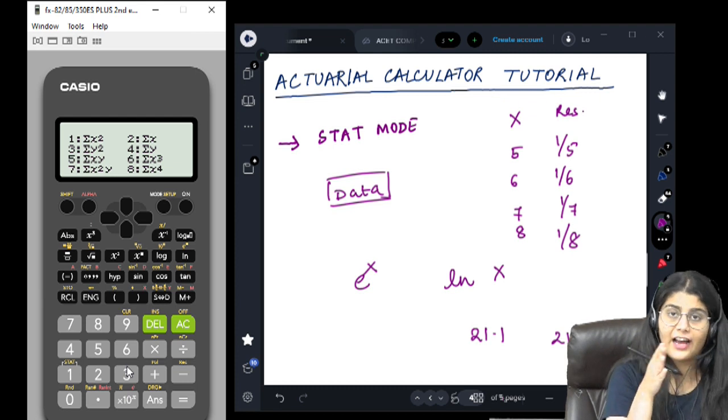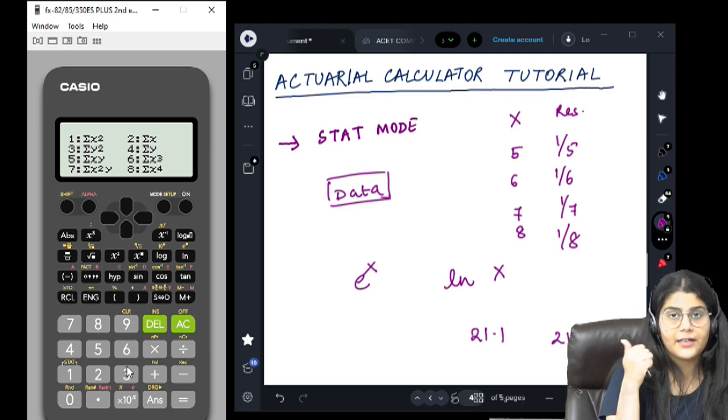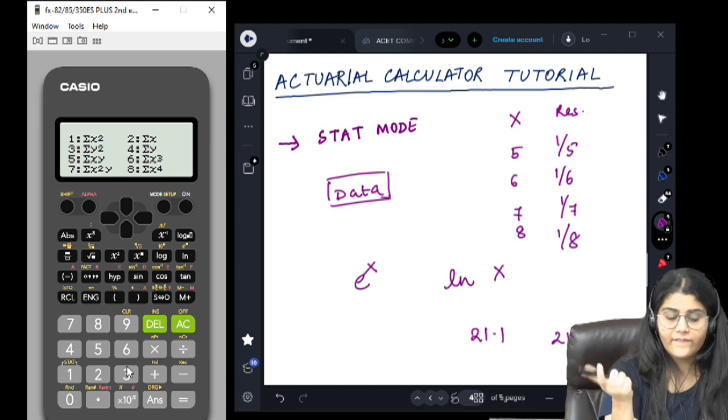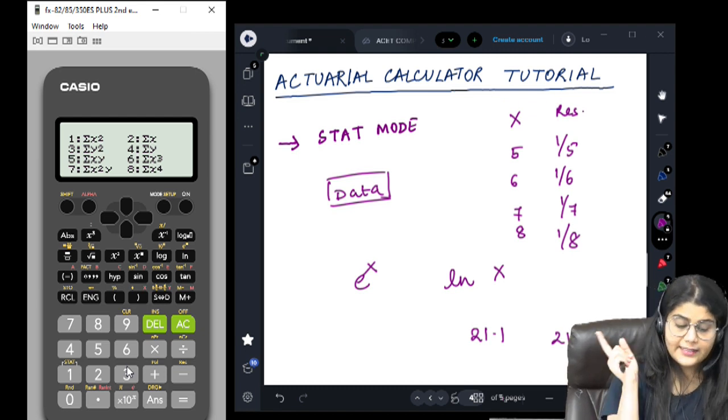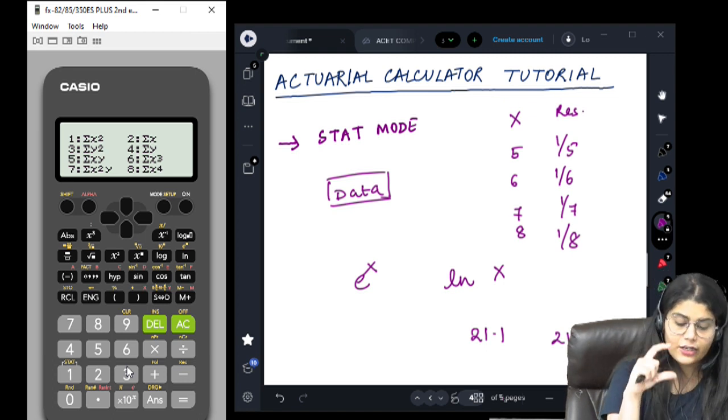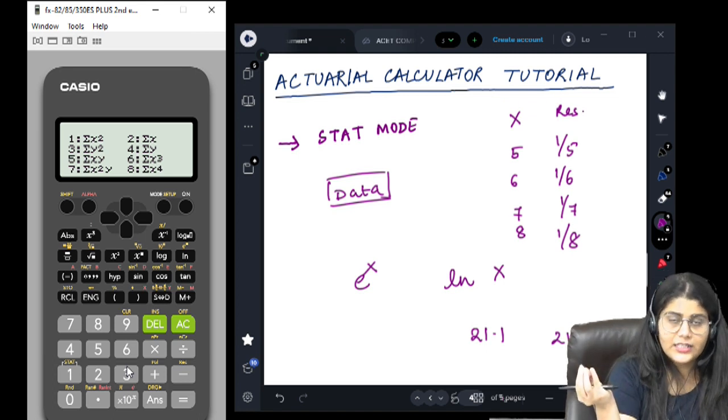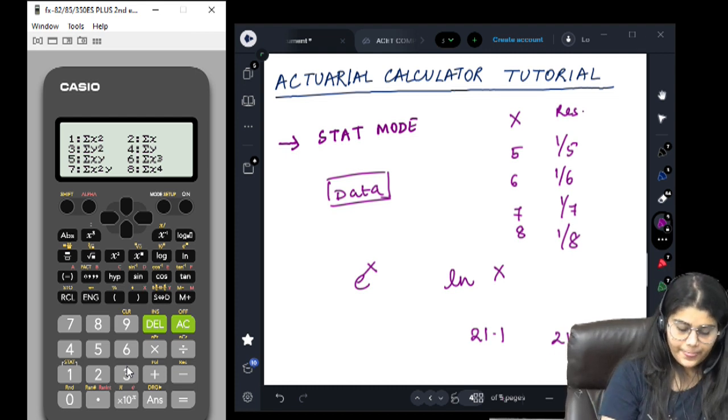In the summation, now we have a variety of summations. We have sigma x and sigma x square, that was there earlier as well. But now we have sigma y and y square. We have sigma x into y, sigma x cube, sigma x square y, and sigma x to the power 4. Because these calculations are often used in different measures such as QNES, kurtosis, etc.